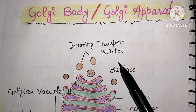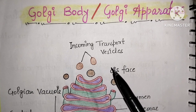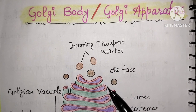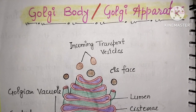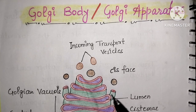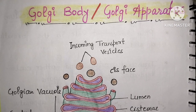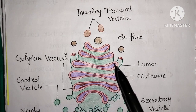You know that the endoplasmic reticulum synthesizes proteins because it has ribosomes attached. The protein is transferred from the endoplasmic reticulum to vesicles and given to the Golgi apparatus, which further processes it and transports it to the required destination.